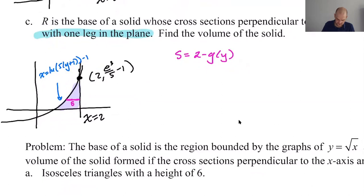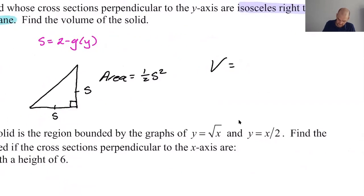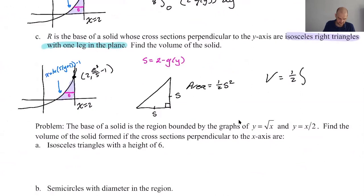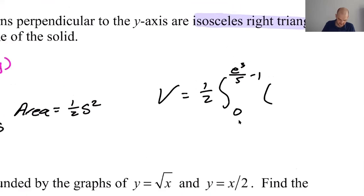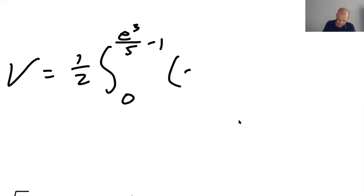I'm going to draw an isosceles right triangle. Well, I'm going to try to. Right. So the leg is in the plane. So this is S. So this is also S. So then the area is 1/2 base times height. So 1/2 S squared. So the volume that we're looking for here is going to be 1/2, the integral from... It's still the same bounds. So since it's perpendicular to the y-axis, we use y values. So from 0 to e cubed over 5 minus 1. 0, e cubed over 5 minus 1. And then S squared. And S is 2 minus g of y. 2 minus g of y squared. dy.